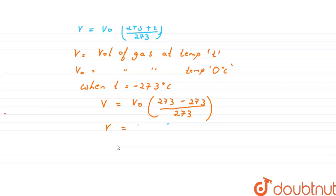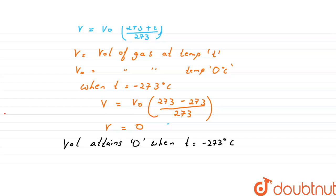What do we infer from this? In the Celsius scale, volume attains a zero value at minus 273 degrees Celsius. Volume attains the value zero when T is equal to minus 273 degrees Celsius.